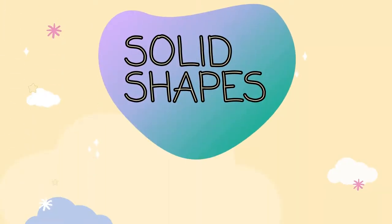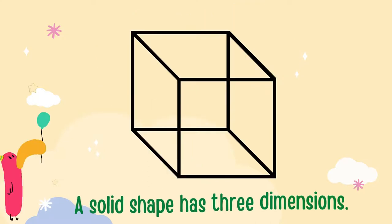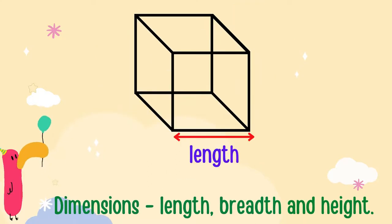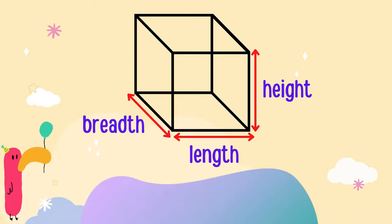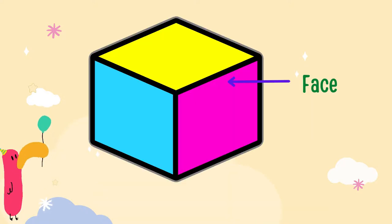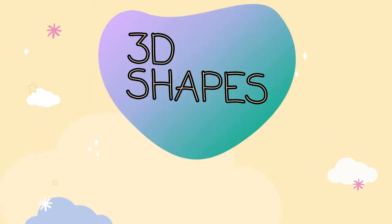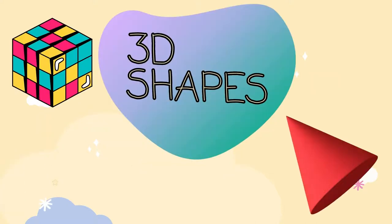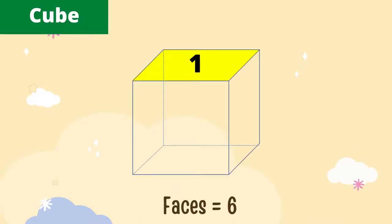A solid shape has three dimensions: length, breadth, and height. So it is also known as three-dimensional or 3D shape. A solid shape has faces, edges, and vertices. Let's learn about some 3D shapes.